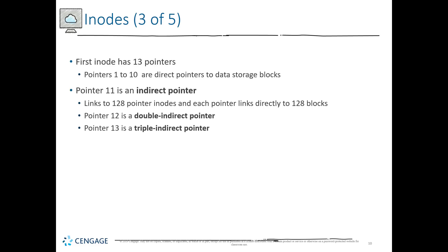An inode has 13 pointers. Pointers 1 through 10 are the direct pointers to the data storage block — that's where the data is actually stored. Pointer 11 is an indirect pointer that will link to 128 pointer inodes so that they point directly to those 128 blocks. Pointer 12 is a double indirect, and pointer 13 is a triple indirect.